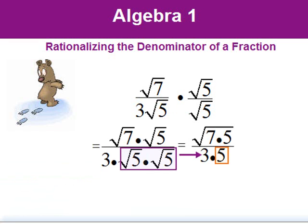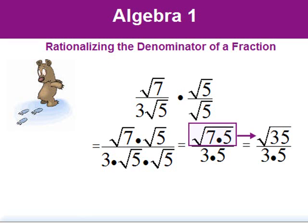So now we have three times five in the denominator. Seven times five equals thirty-five. The number thirty-five does not contain any perfect squares, so the radical in the numerator is in its simplest form.